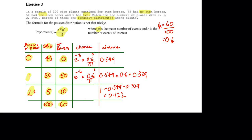To get the number of plants expected, all we have to do is multiply these probabilities by the total number of plants, to give us 54.9, 32.9, and 12.2 plants expected.